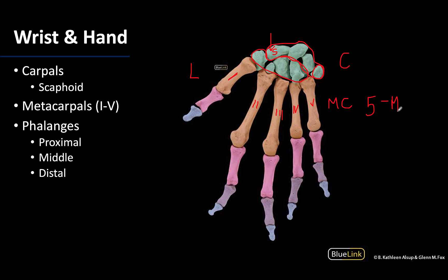There are three sets of phalanges and they get smaller the more distal you get. The proximal phalanges are shaded in a pinkish-purple color, the middle or intermediate phalanges are shaded in light purple. Notice that the first digit does not have a middle phalange — this is why there are 14 phalanges in all, not 15. Lastly, the distal phalanges are shaded in light blue and are quite distinctive in shape despite being small.